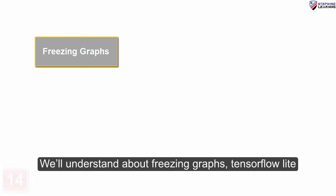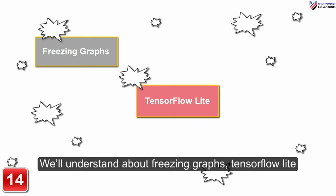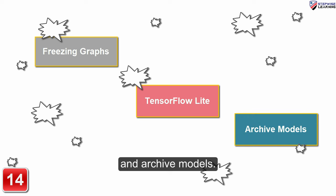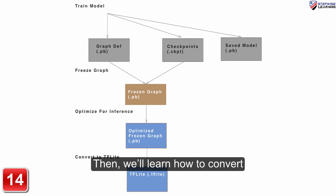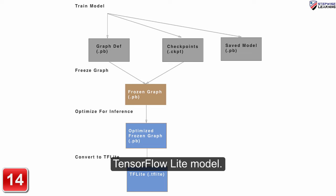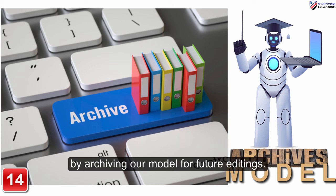Finally, in the fourteenth section, we will understand about freezing graphs, TensorFlow Lite and archive models. This is the last section where we will save our human detection model using the freezing graph method. Then we will learn how to convert the human detection model into a TensorFlow Lite model, and we will end this project by archiving our model for future editing.